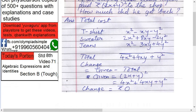Now, what did he give? He paid (2x + y)². Expanding this: (2x + y)² equals 4x² plus 4xy plus y². So he gave exactly this amount, and the total cost was exactly the same. Therefore, the change returned will be: amount paid minus total cost equals 0.